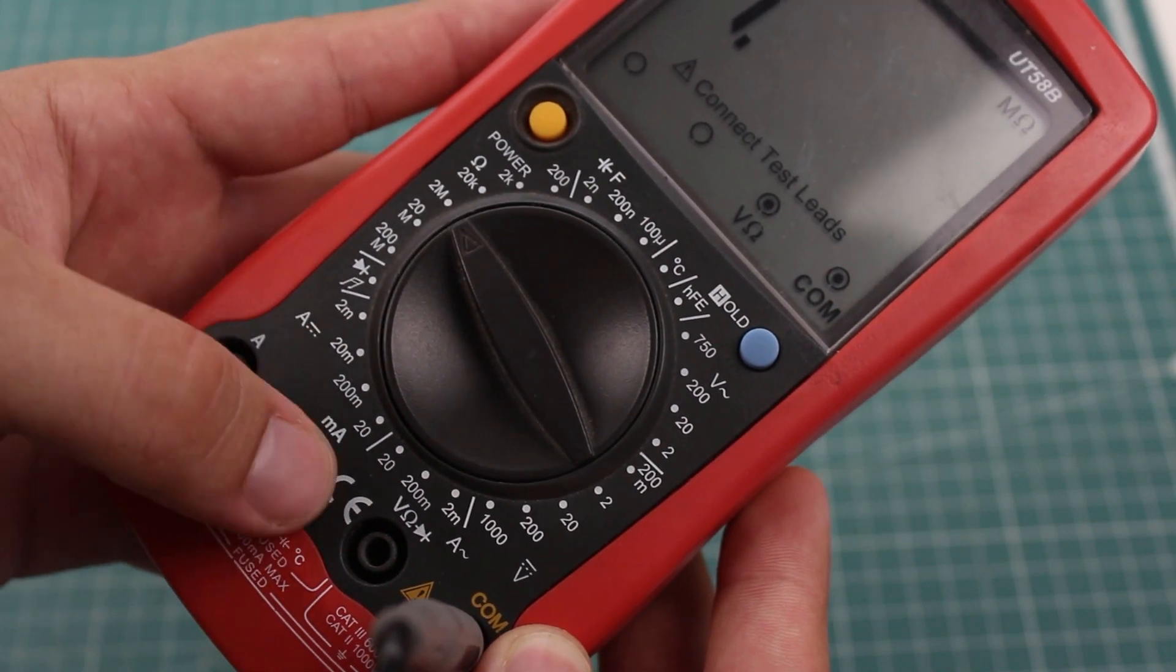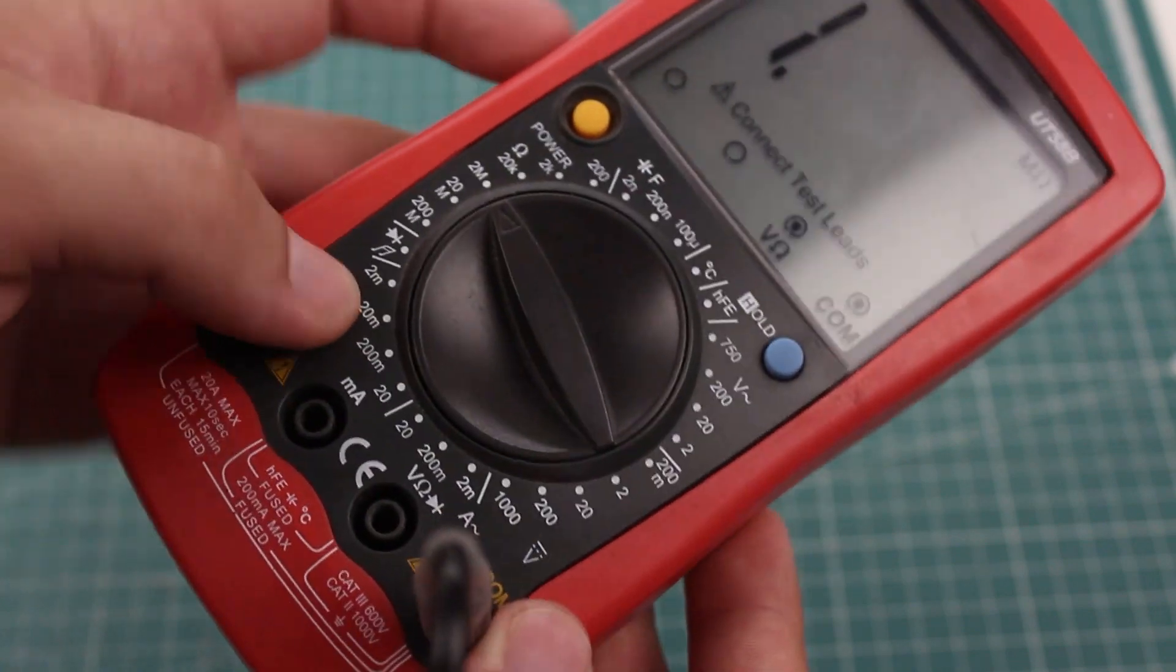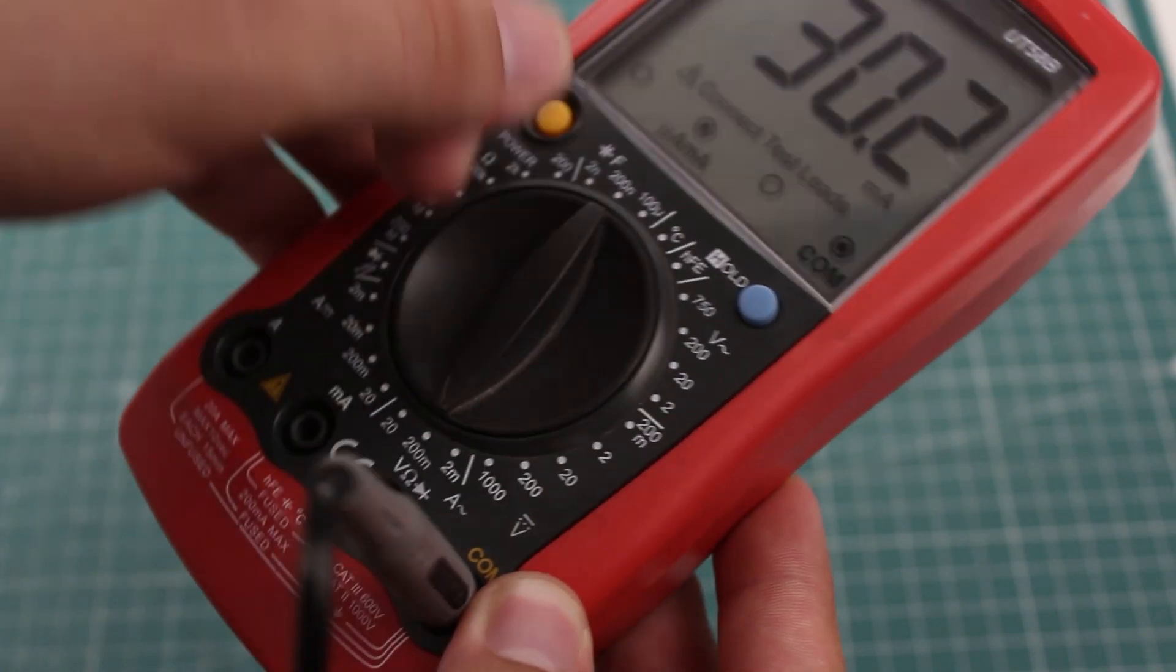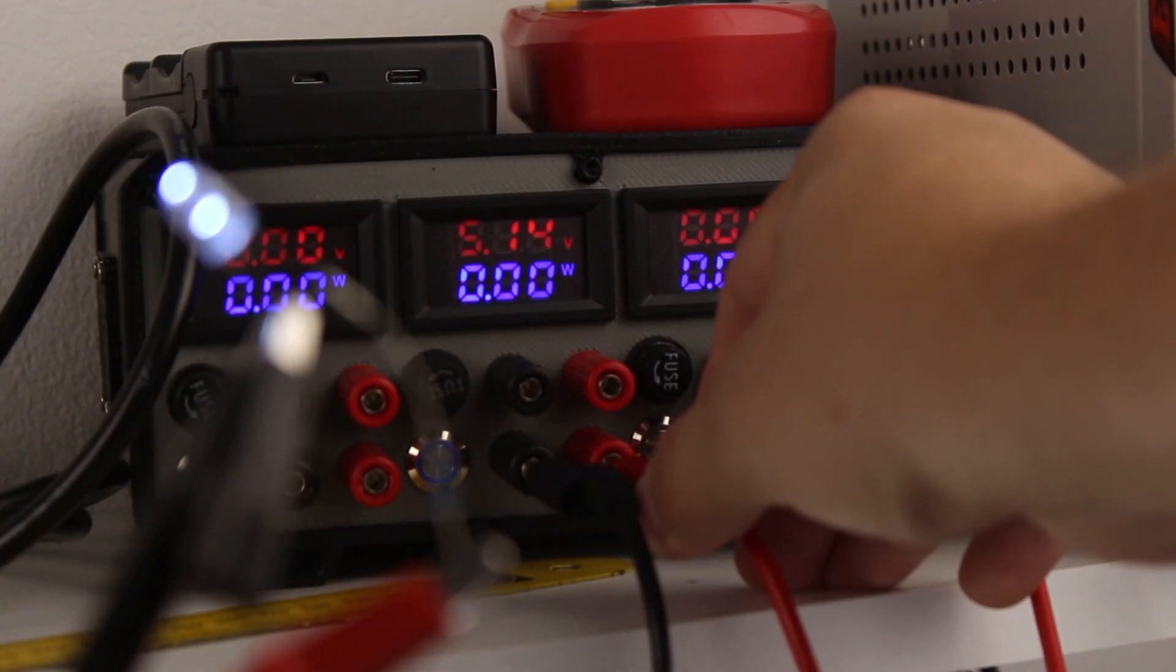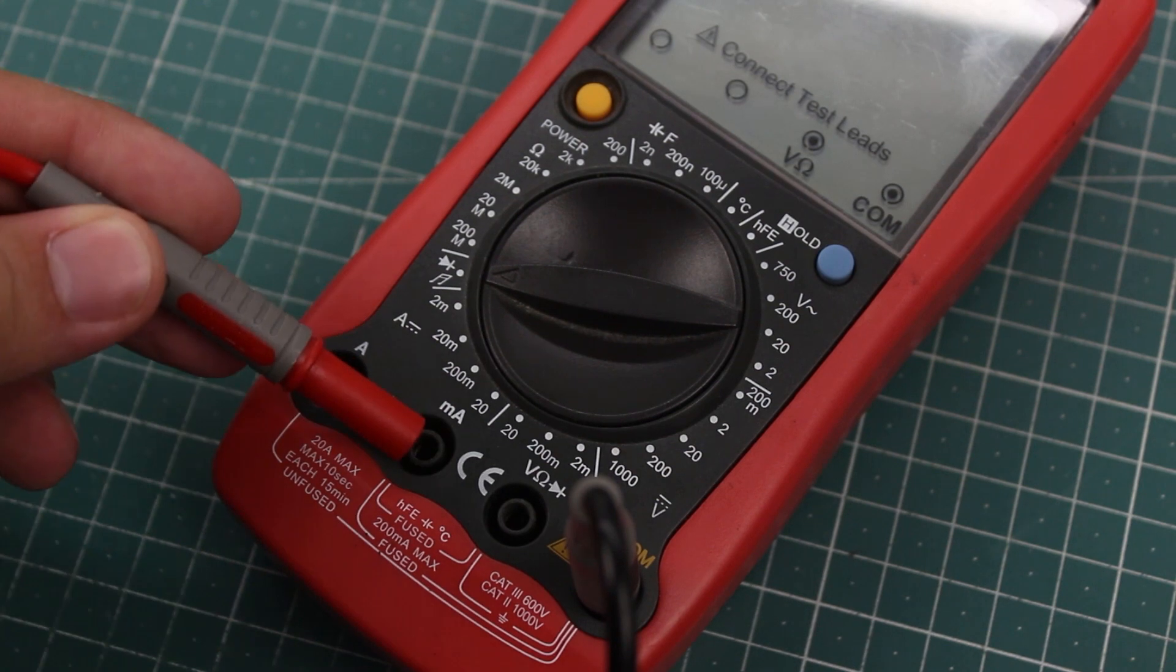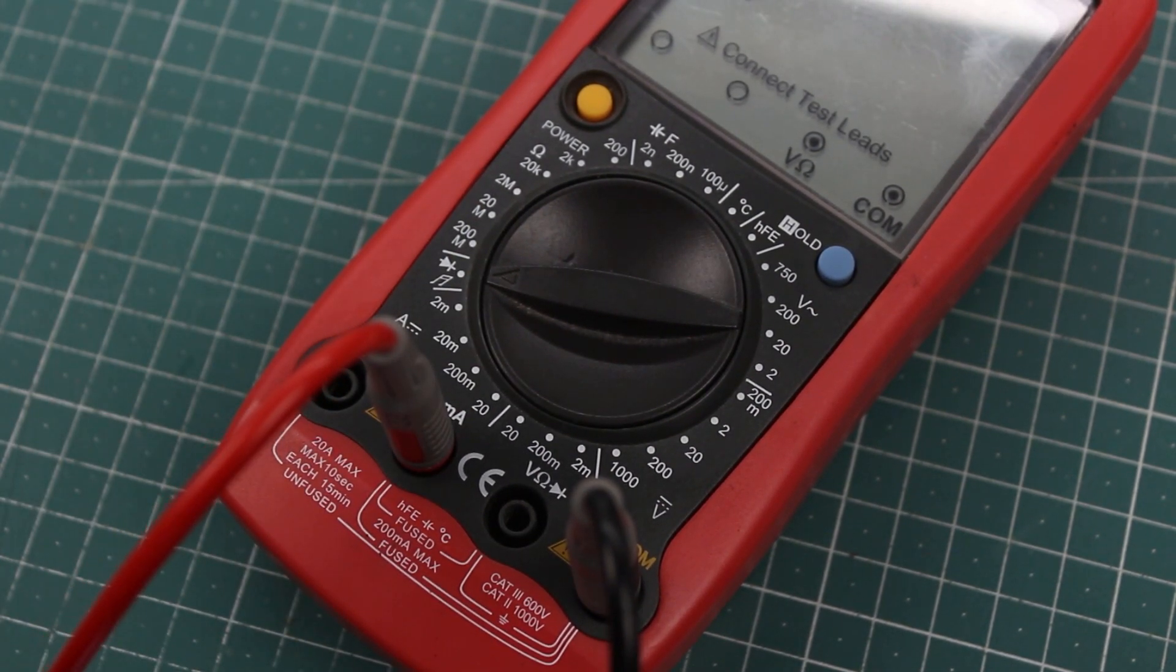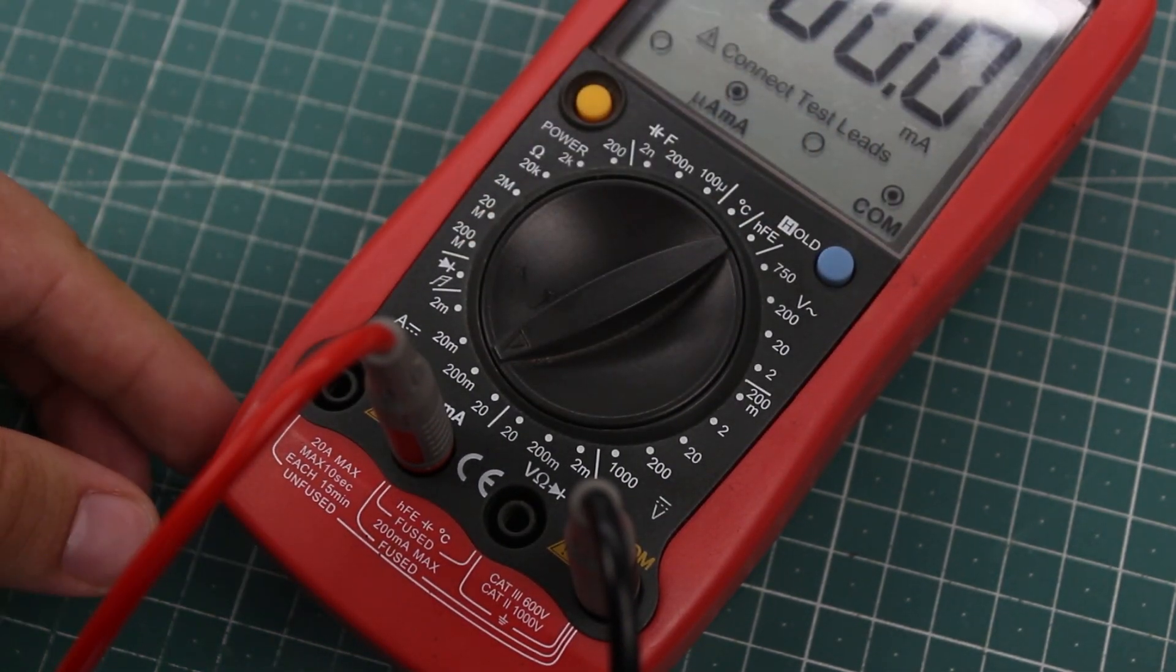For measuring current, we have to choose between AC and DC again. Since AC is dangerous and a much better way to measure it would be with a current clamp, I'm going to skip it altogether. I'll take one LED with a current limiting resistor and connect it to the 5V rail on my power supply. These LEDs usually draw up to 30mA, so I'll use a 200mA port to get a more precise reading. I'll move the selector switch to the 200mA DC range.